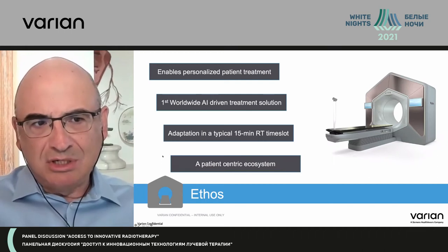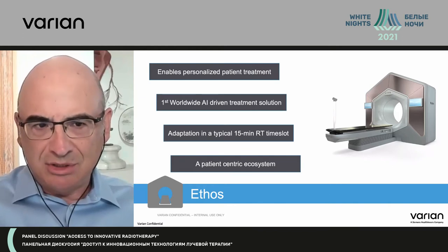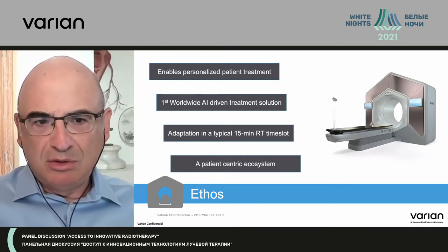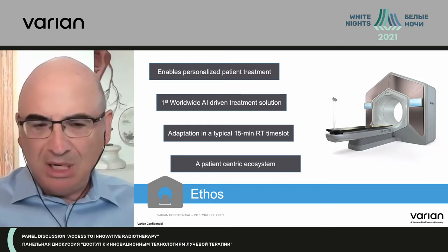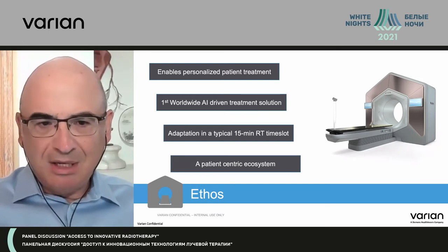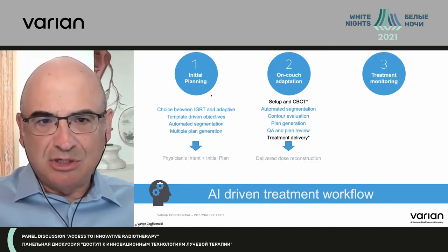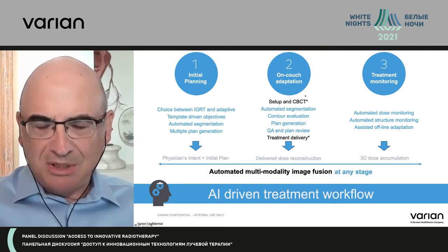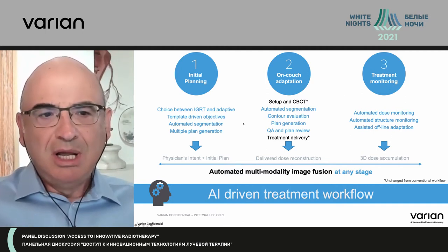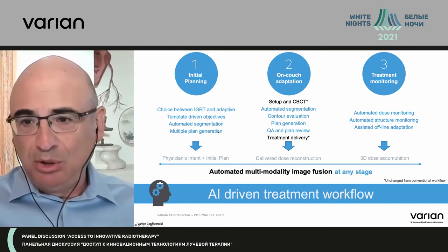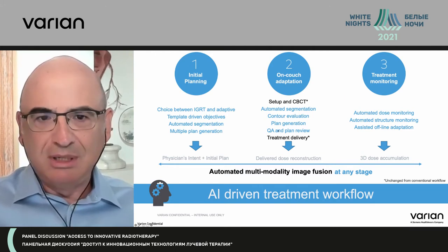So what is Ethos? Most importantly, it is assisted with artificial intelligence. By design, we wanted to make adaptive happen in the 15-minute treatment slot just to make it feasible for many clinics to actually implement this. It's very much centered around the patient. What I'm showing here is the process in initial planning, during the time the patient is on the couch, and in between fractions — which here means treatment monitoring. All the steps described here in blue are new, added to the Ethos machine.